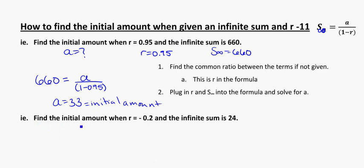As another example here, find the initial amount when r is equal to negative 0.2. So that's okay because it's between negative 1 and 1. And our infinite sum is 24. So here the infinite sum is equal to 24.